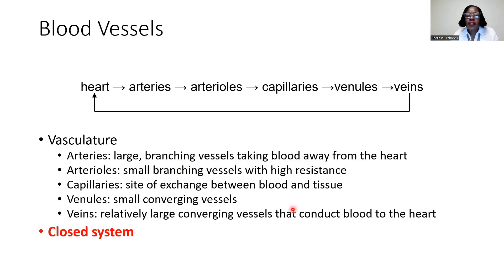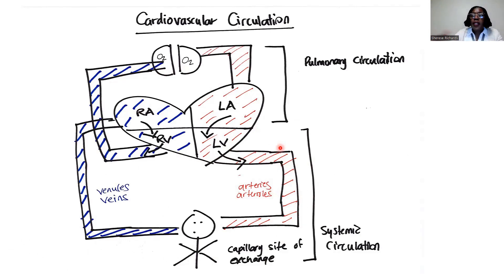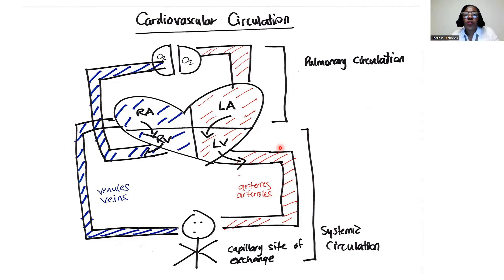Venules are simply smaller veins that will then converge to bring blood back to the heart. Now, we want to remind ourselves that the vascular system is a closed system. A closed system means that the blood is moving in a continuous circulatory fashion — there is no blood leaving the system and no blood entering the system. There is no opening where the blood is in communication with any other circulatory system. There can be exchange or diffusion through this circulatory system, but there's no point where the blood can exit unless you have a cut, a bleed, or a tear in any of the vessels.